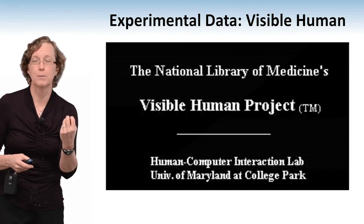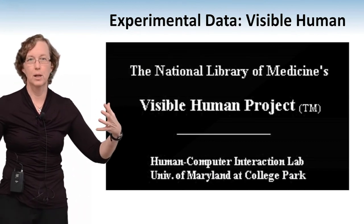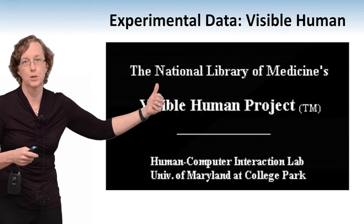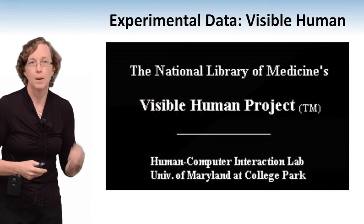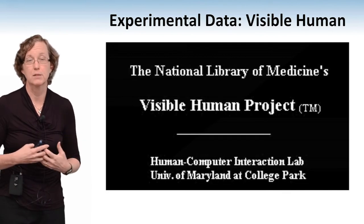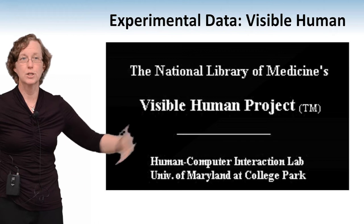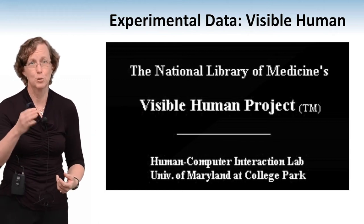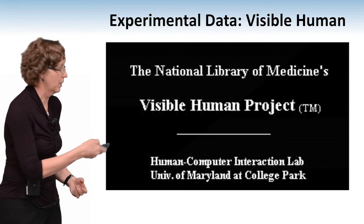That's the first problem — similar to where you get data for climate modeling, this is the question of where you get data for simulating the human body. You have to start with very detailed images or other kinds of information. This is specific to one person, so the question is: can you build general models so that we don't have to slice someone up to build a specialized model for each individual?